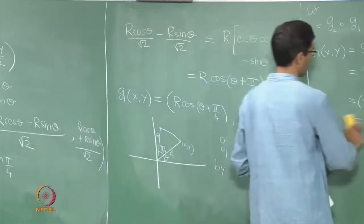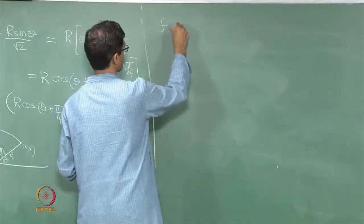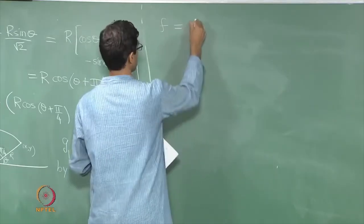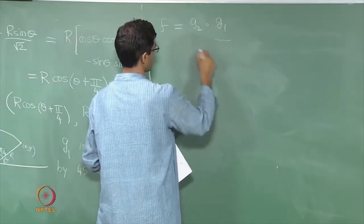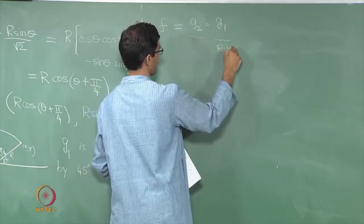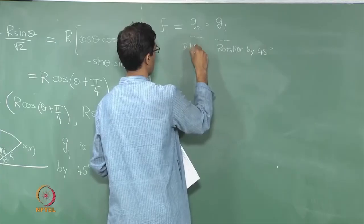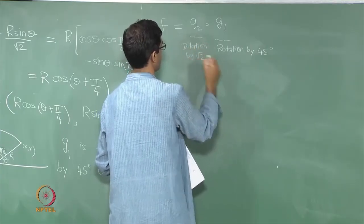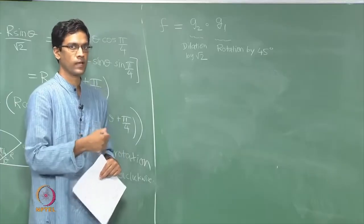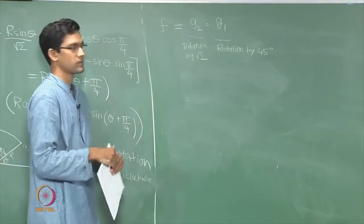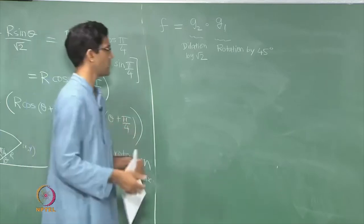Coming back to our analysis of f: recall that f = g₂ ∘ g₁. So the function f is simply the following — you first perform a rotation by 45 degrees, and then follow it up with a dilation by a factor of √2. That simple looking formula x−y, x+y, when analyzed more deeply, breaks down into two simpler constituents: a rotation by 45° and a uniform dilation.